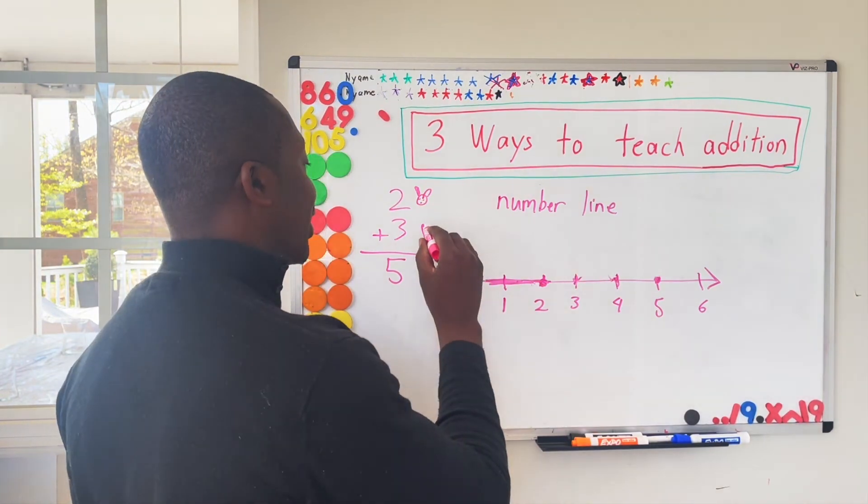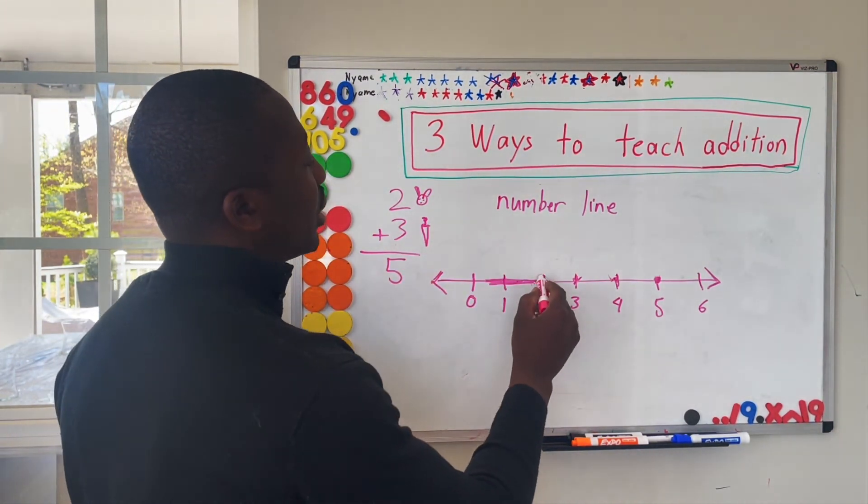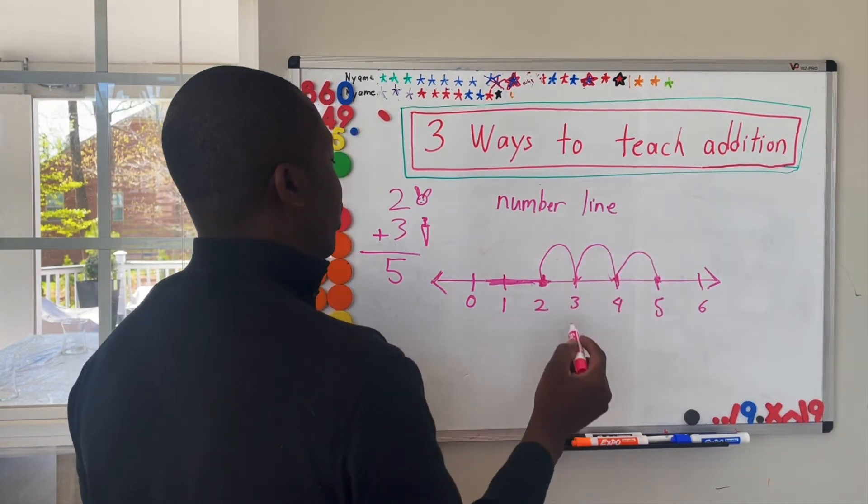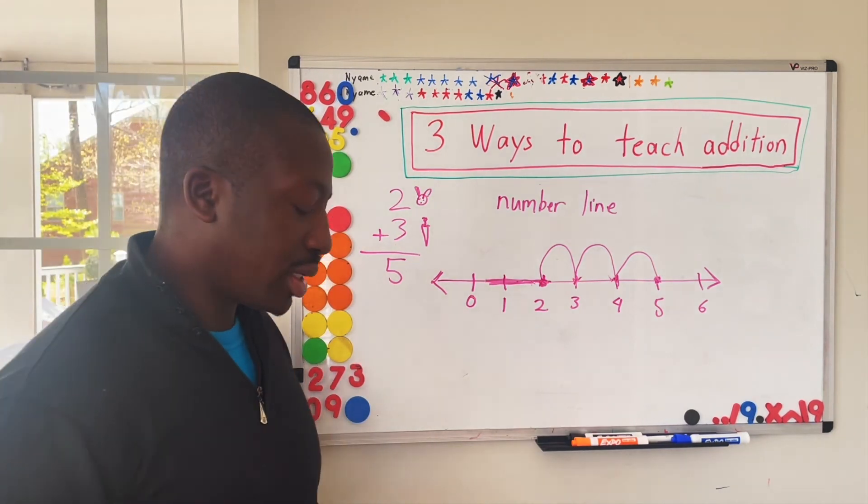My artist is not the best. And they'd go three. So, this is one, two, three, and then the final answer is five. So that is the number line method of teaching addition.